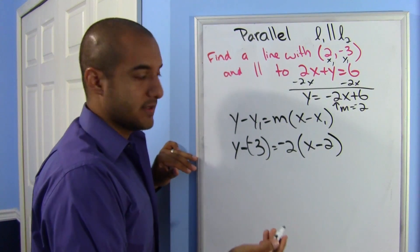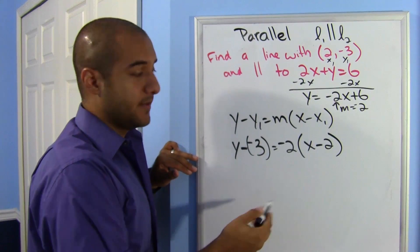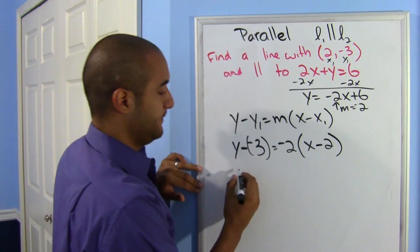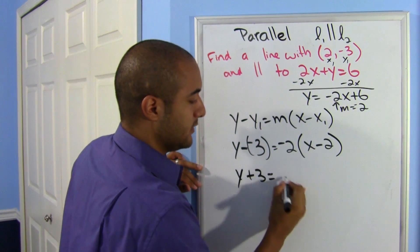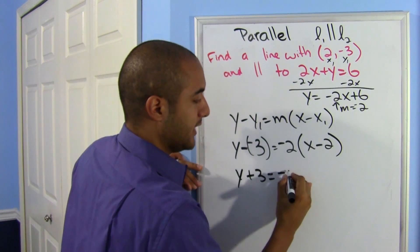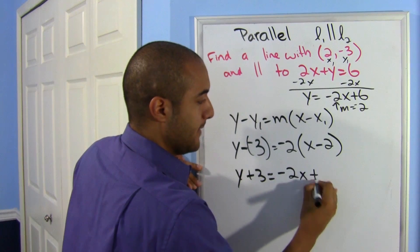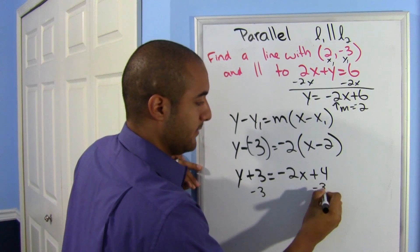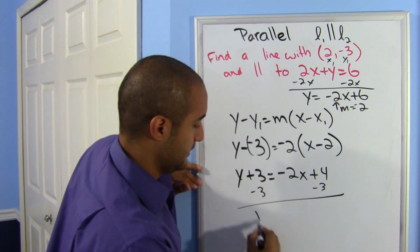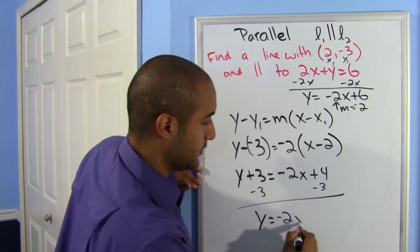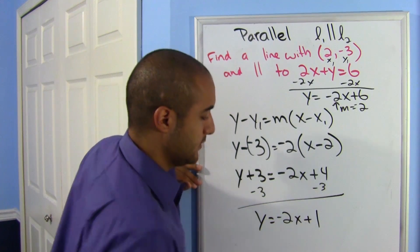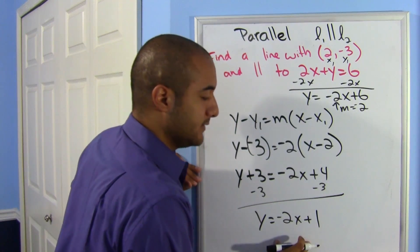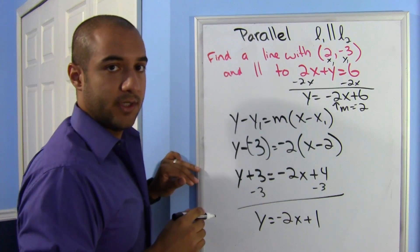Most likely, they'll want it in slope-intercept form. If that's all they want, you can stop here or keep going. I'll keep going just in case. So this says y plus 3 equals, distributing here, I get negative 2x plus 4. Move this 3 over, so minus 3. And my final answer is y equals negative 2x plus 1. So these two lines are parallel and it goes through the point that we needed.